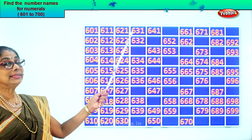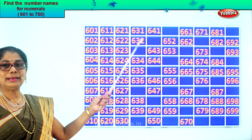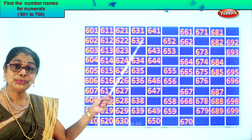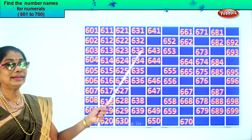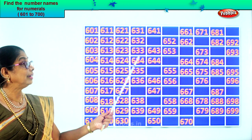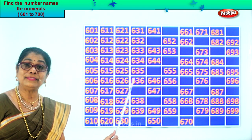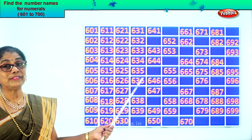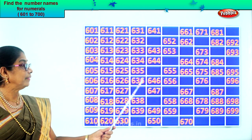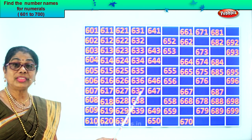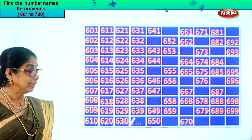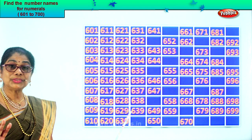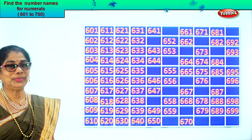After 30 comes 31, so 631. Then 632. After 2 comes 3, after 32 comes 33, so 633, 634, 635, 636. After 6 comes 7, after 36 comes 37, so 637, 638, 639. After 39 comes 40, so 640. Good, very nicely filled in.